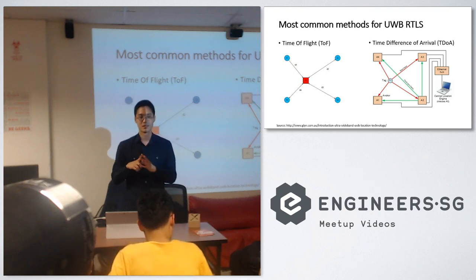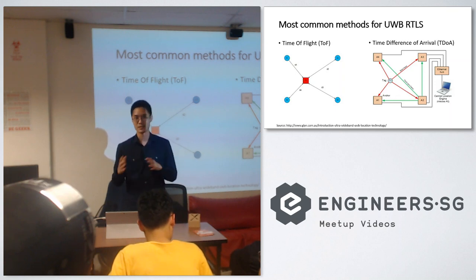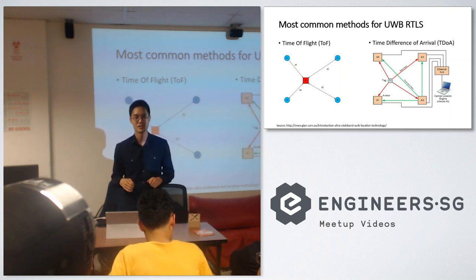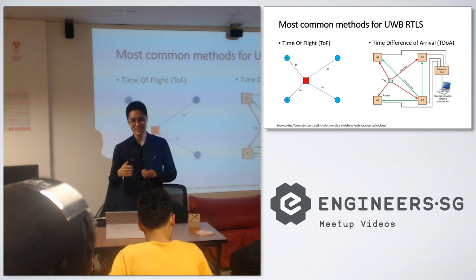Question: Do you know what frequency UWB operates on? Answer: It's from 3 GHz to 9 GHz.